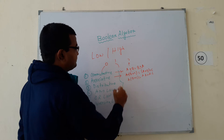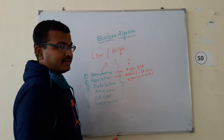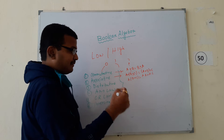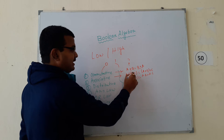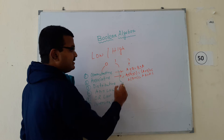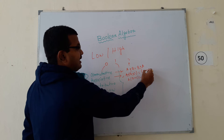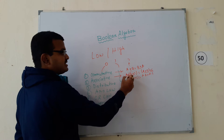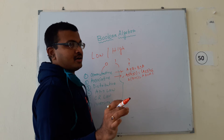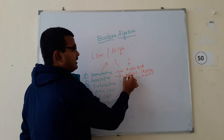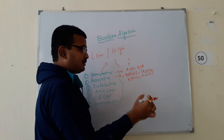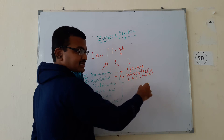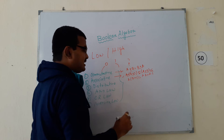Next is associative law. Suppose A, B, C are three variables. If we add B plus C first, and after that we add this result with A, this result is equal to adding A plus B first and then adding C. Means, if we change the sequence, the result will not differ. B plus C addition first, then add A — this result is equal to A plus B, then addition with C. This law is known as associative law.